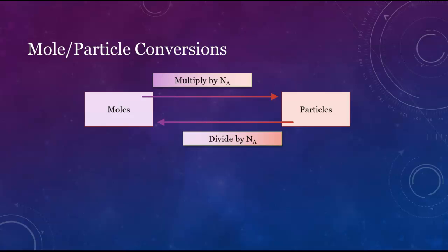If you're given moles and asked for a number of some type of particles, you just multiply the given number of moles by Avogadro's number. To go from particles into moles, you just divide.